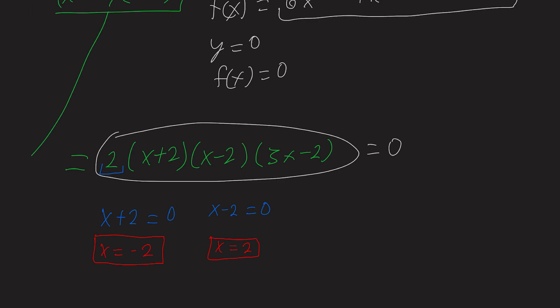So I want to see when 3x minus two equals zero. So let's rewrite this as 3x equals two. And then I can divide both sides by three to get x equals two over three. And this is my third root.